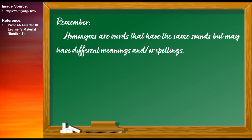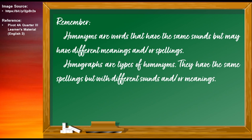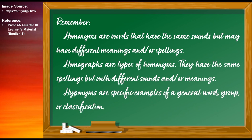Remember that homonyms are words that have the same sounds but may have different meanings and spellings. Homographs are types of homonyms — they have the same spellings but with different sounds and meanings. Meanwhile, hyponyms are specific examples of a general word, group, or classification. I hope that you learned something from our lesson today and enjoyed learning while listening. See you in our next class. Bye!